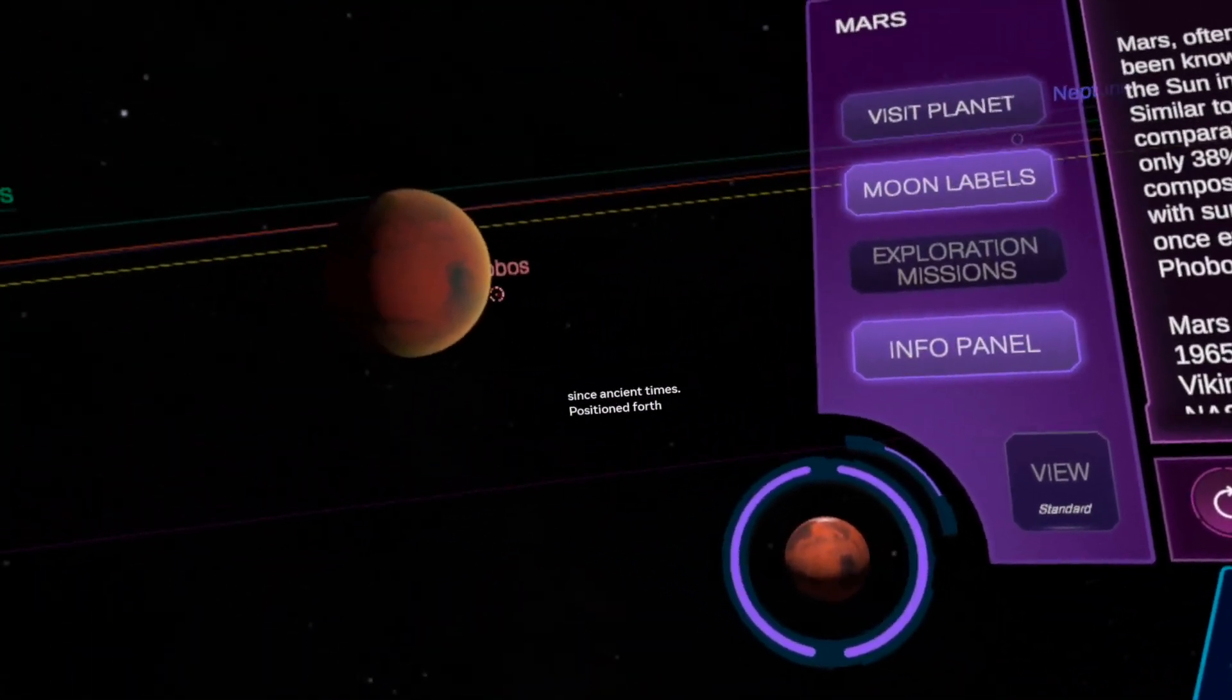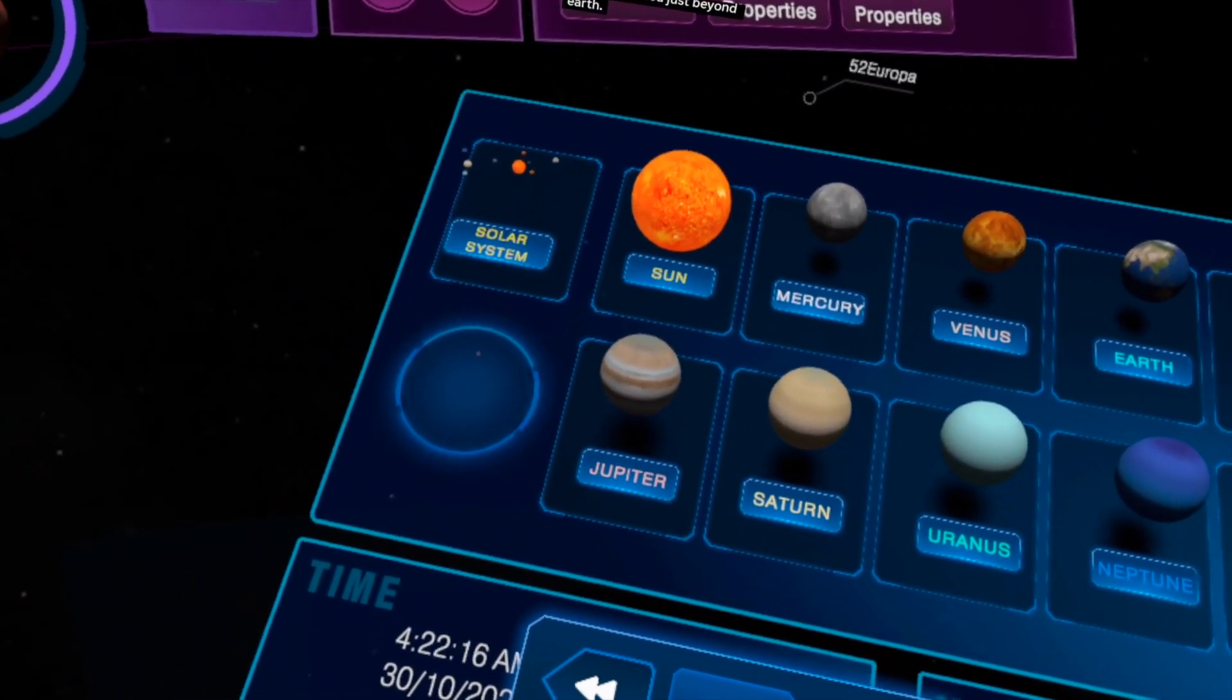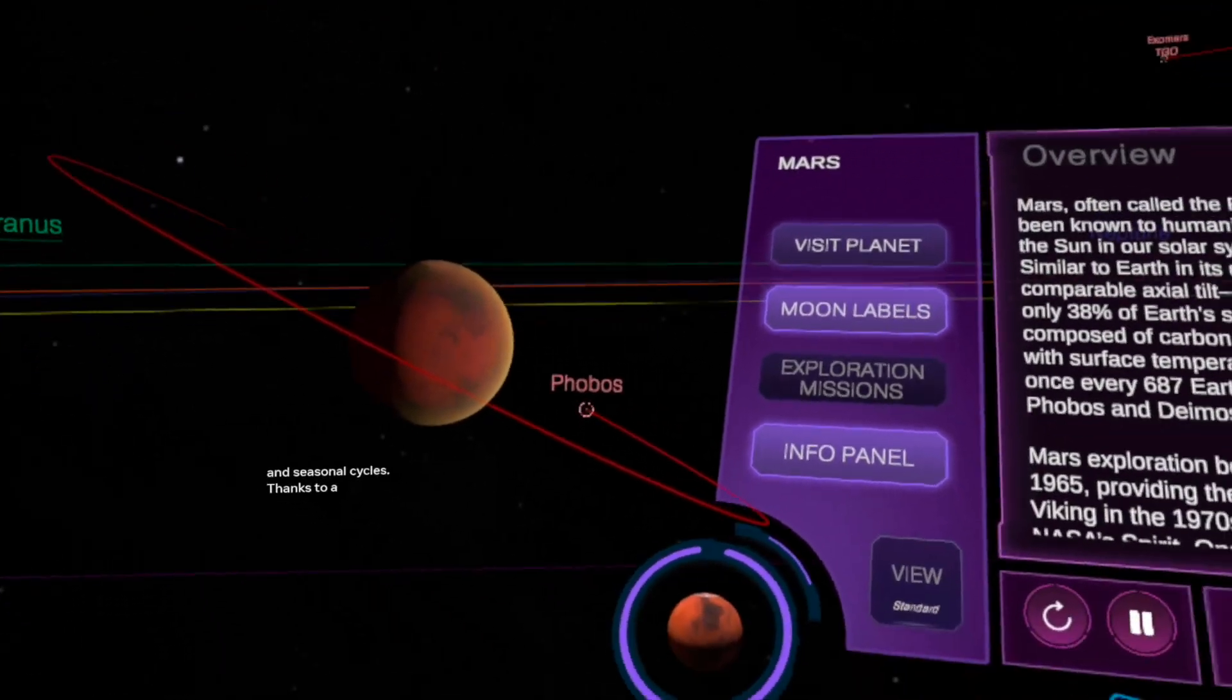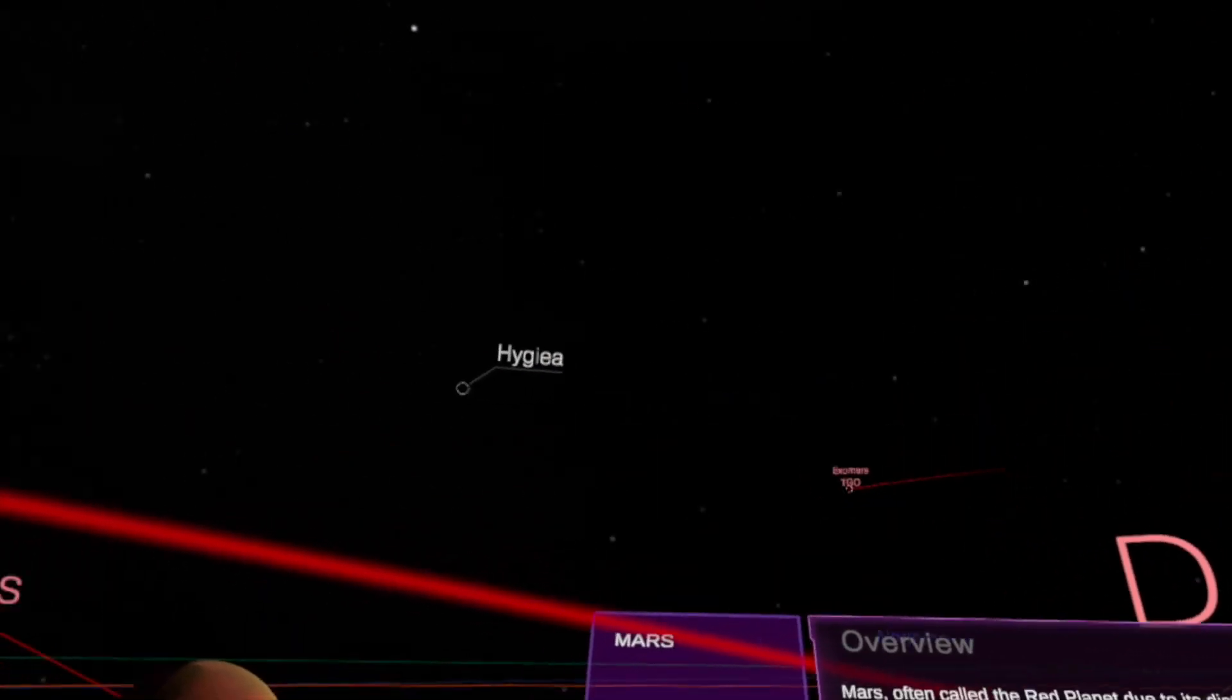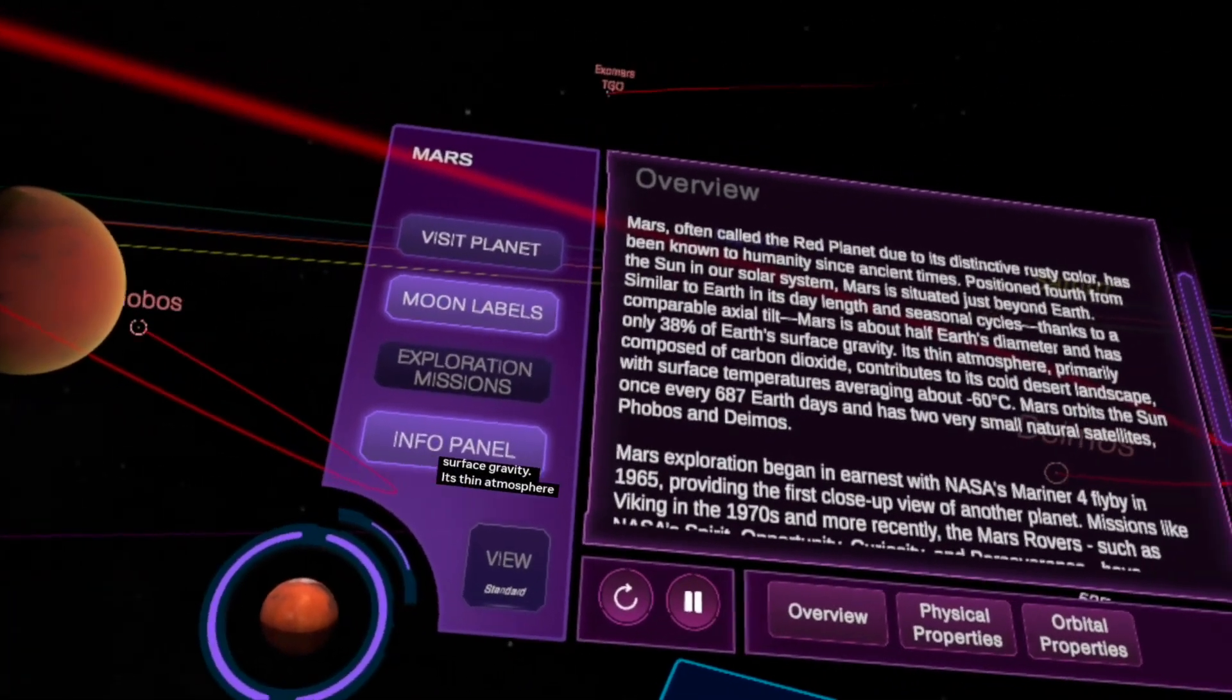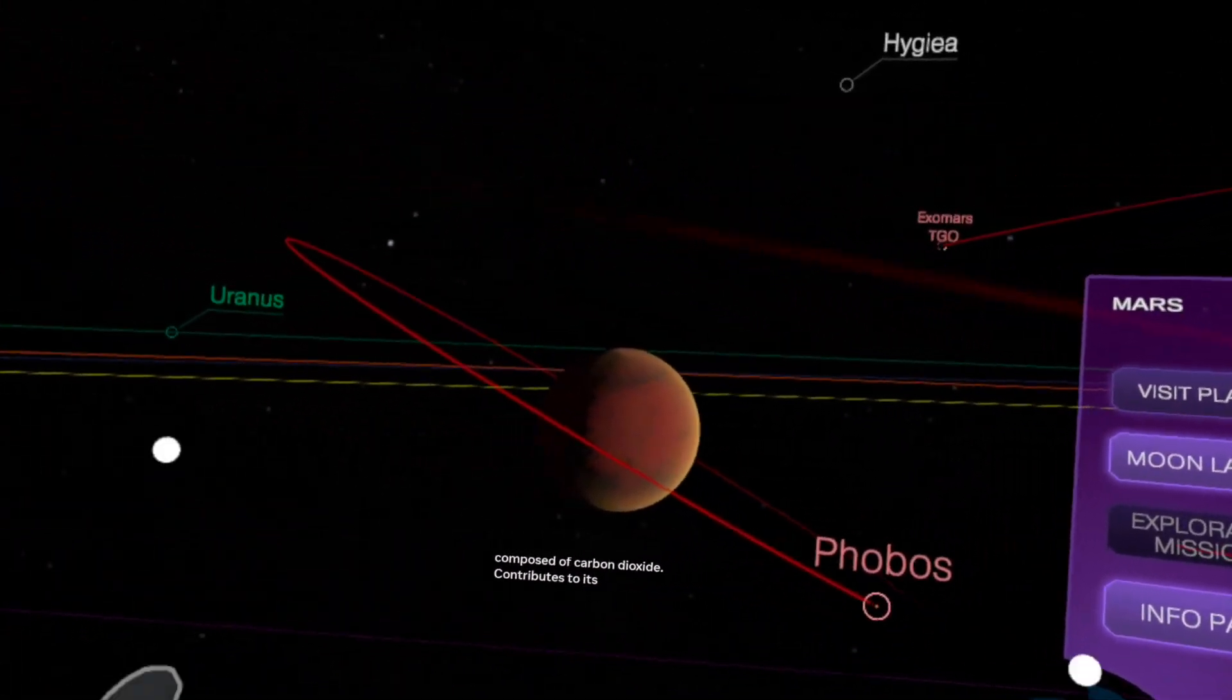So we will start with Mars, the dream of Elon Musk. Put it in the thingy over there. Let's see what happens. Okay, the planet Mars. One moment. View Mars. Often called the red planet due to its distinctive rusty color, has been known to humanity since ancient times. Positioned fourth from the Sun in our solar system, Mars is situated just beyond Earth. Similar to Earth in its day length and seasonal cycles thanks to a comparable axial tilt, Mars is about half Earth's diameter and has only 38% of Earth's surface gravity. Its thin atmosphere, primarily composed of carbon dioxide, contributes to its cold desert landscape.